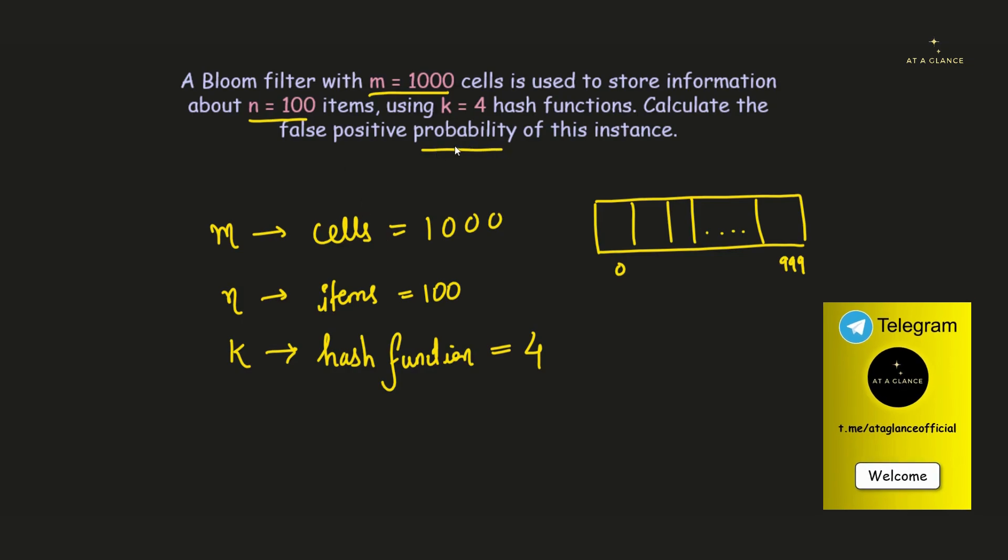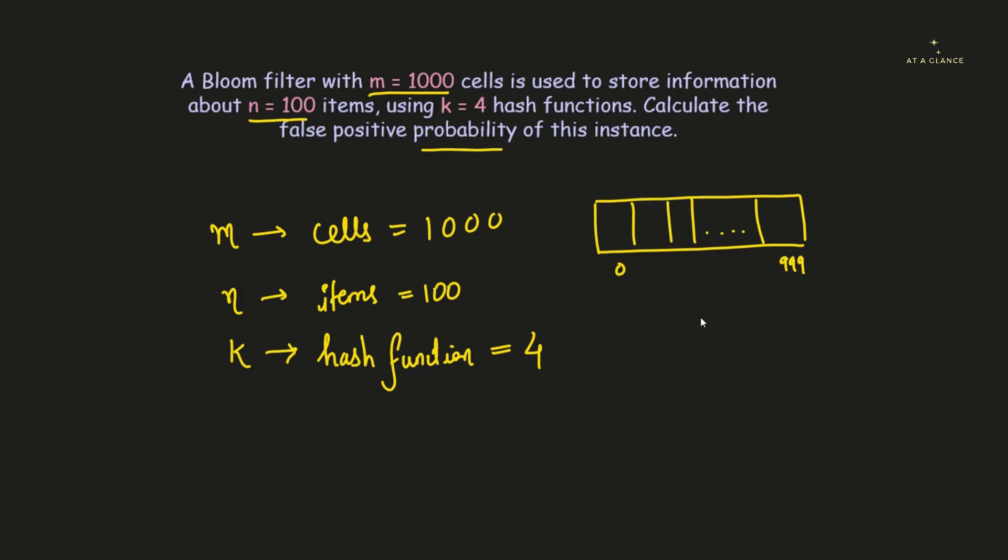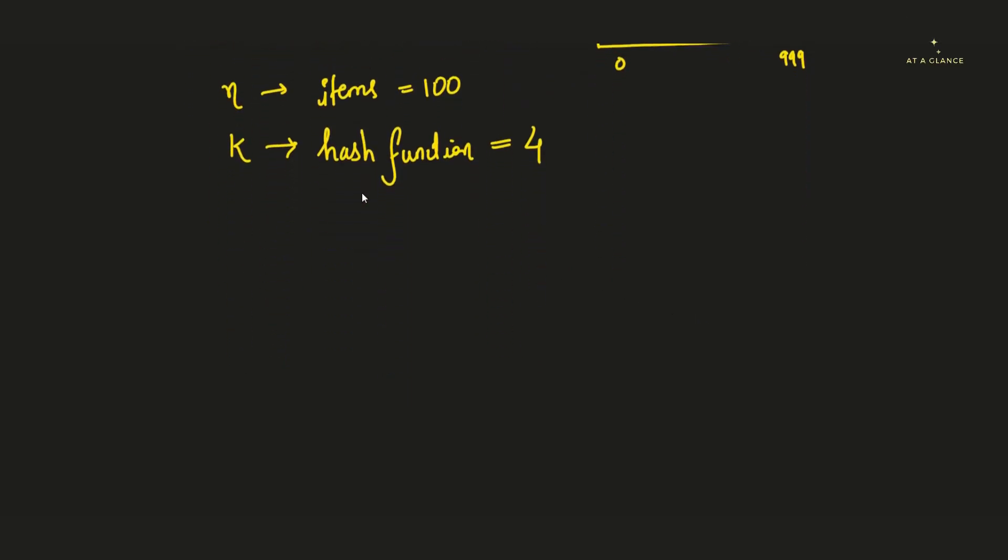And for that we have a formula. Let me write down the formula. The probability, which is denoted by P, the probability of false positive rate is given by (1 - e^(-kn/m))^k.